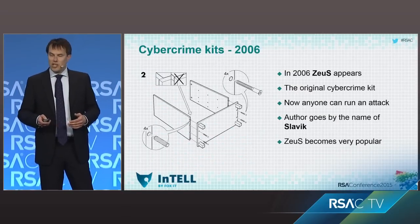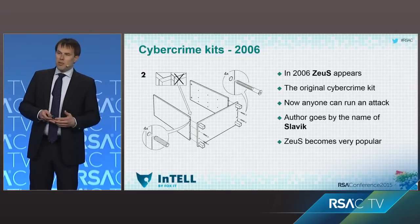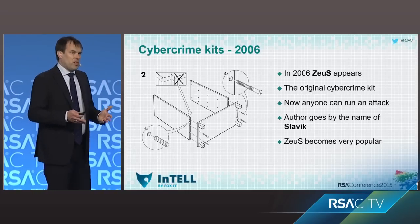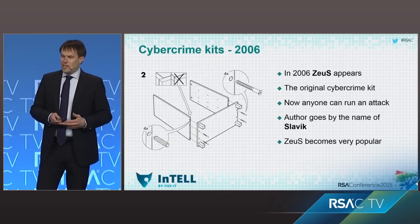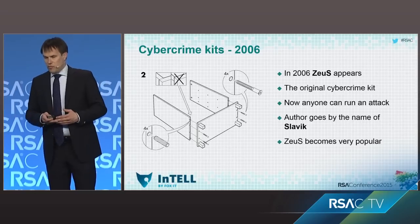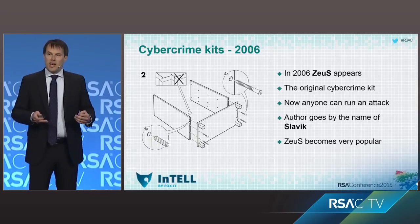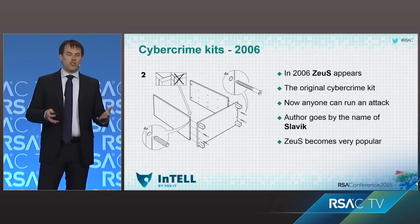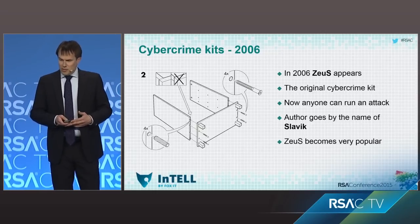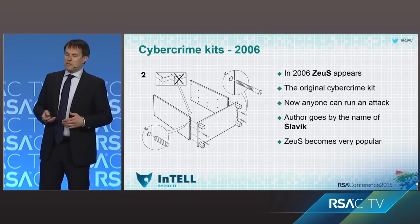But all of that changed, and the big change came in 2006 with the appearance of the first real cybercrime kit. Cybercrime kits made it much easier to run these attacks — criminals who weren't expert developers could now launch their own attacks. Zeus was the first one to appear, the original cybercrime kit written by an author who went by the name of Slavic. After its appearance it started to gain real traction and become very popular. Slavic sold Zeus as a kit on the underground, and then you'd have to set it up and run it yourself. Because it became very popular, this led other people to notice and decide they wanted a piece of the market share.